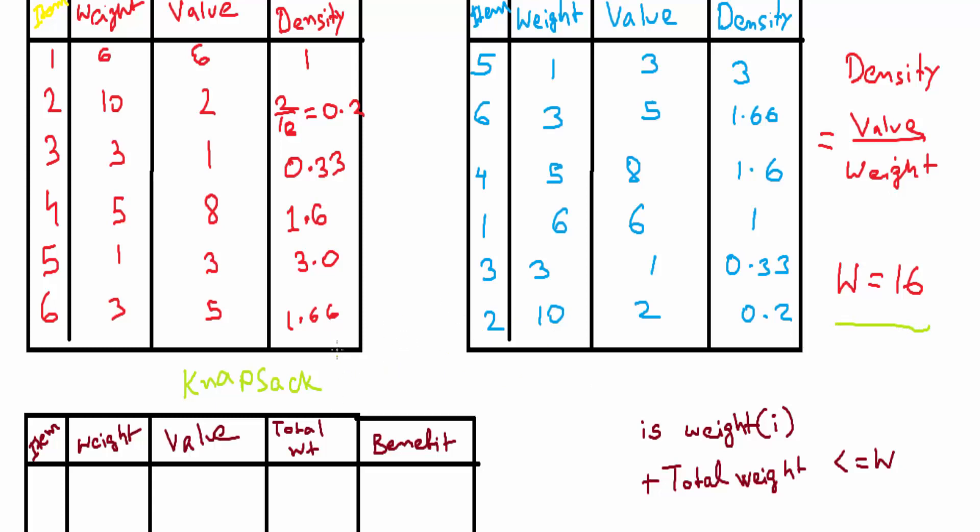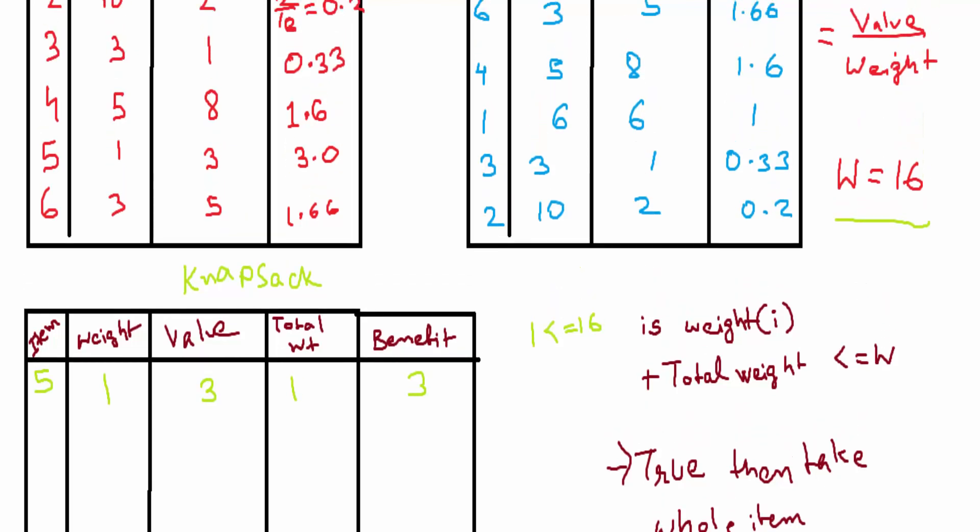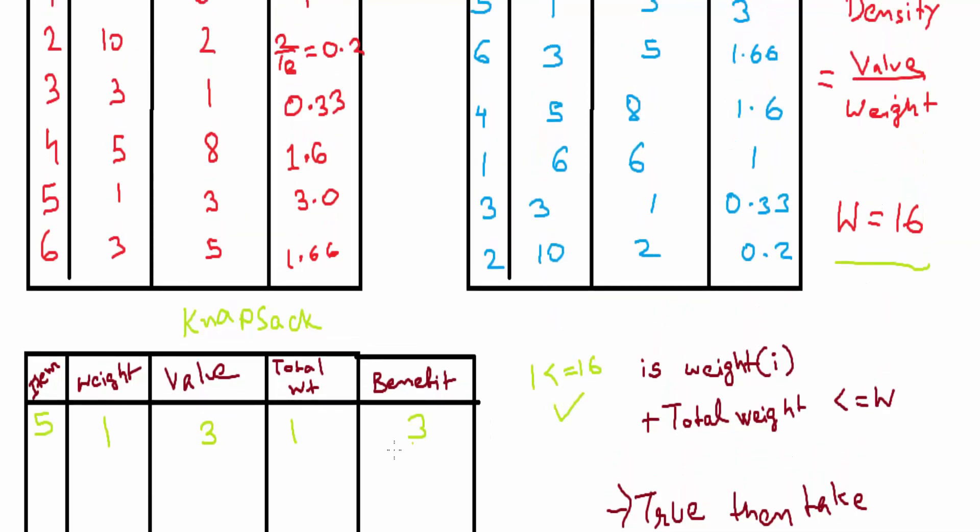Let me explain what I am meaning. If I write 5 here, the 5th item, its weight is 1, its value is 3, and its total weight will be 0 plus 1. Because initially there was nothing, 0 plus 1 is 1. We see that 1 is less than or equal to 16, so we'll take the whole item.